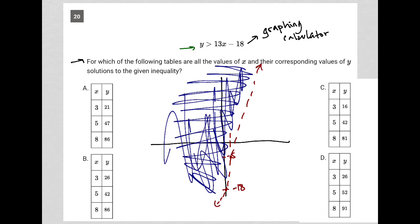So how do I use this? Well, now that I have that graph, and of course your graph will look a lot nicer because you'll have it on your Desmos calculator, we just test out every point from each answer choice. So choice A says we should have the point 3, 21.